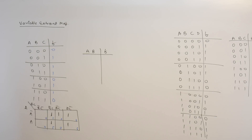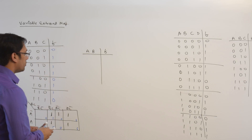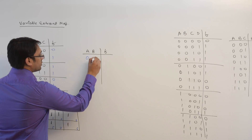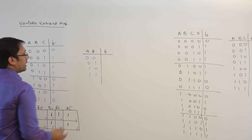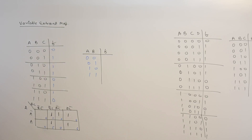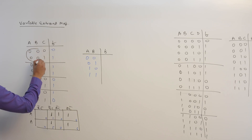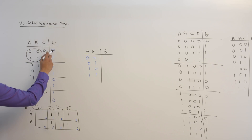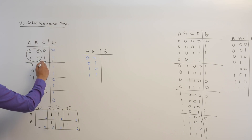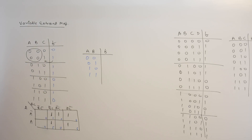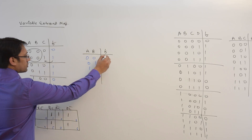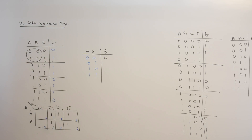We will see how the function F behaves with respect to C. The combinations of A and B are: 0-0, 0-1, 1-0, and 1-1. When A and B are both 0, the function F behaves exactly like C — if C is 0 then F is 0, and if C is 1 then F is 1. So here F is behaving exactly like C.